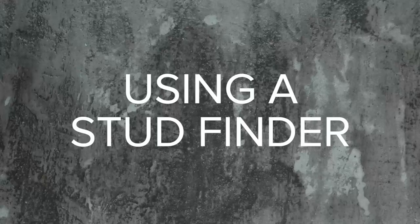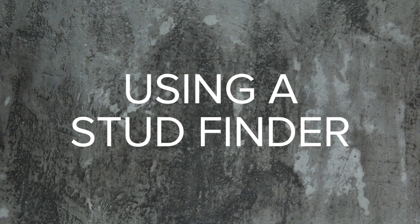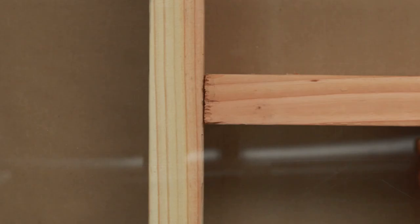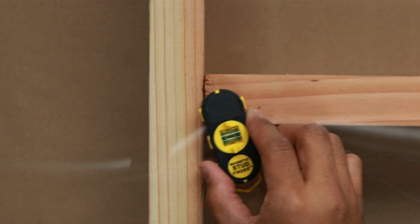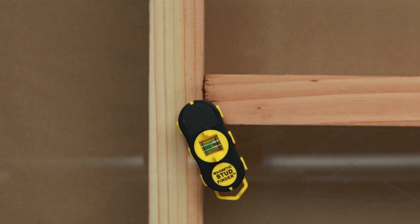The easiest way to find a stud is by using a stud finder. Commonly, there are two types of stud finders, electric and magnetic. Magnetic stud finders will locate the nails in the studs and will latch on when it's over the nail. This will give you a rough idea of where the stud is located.